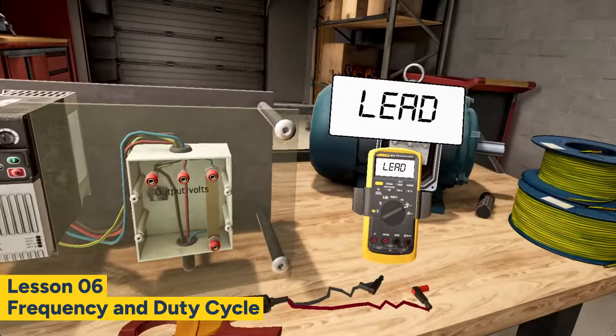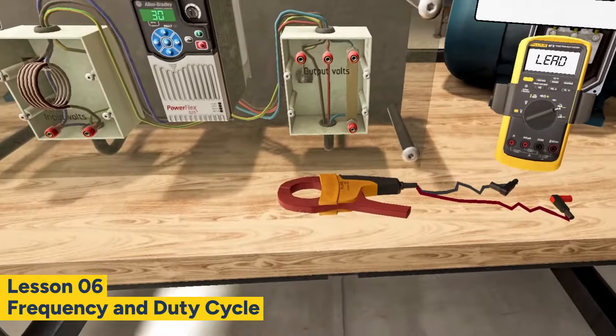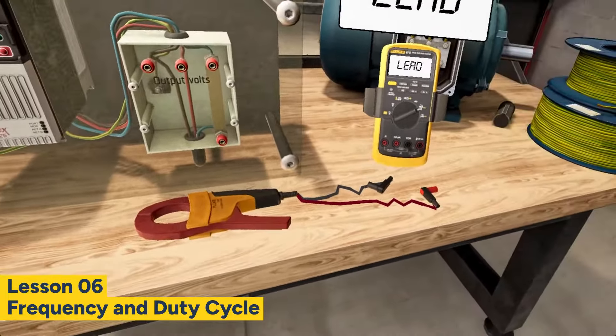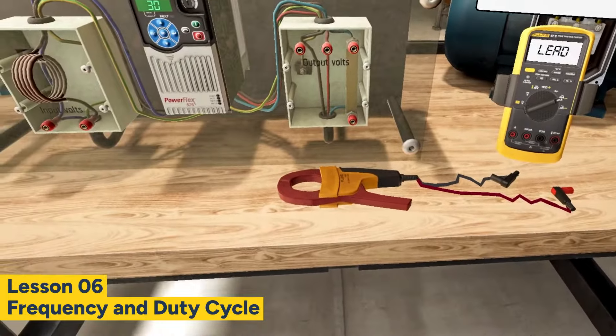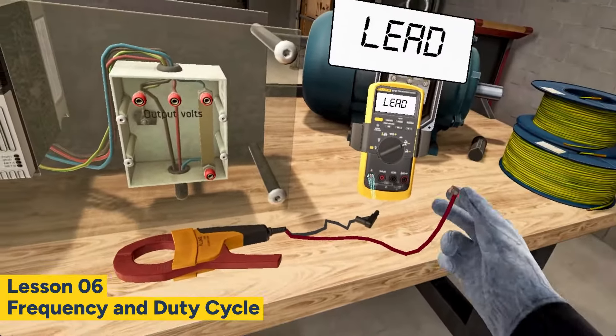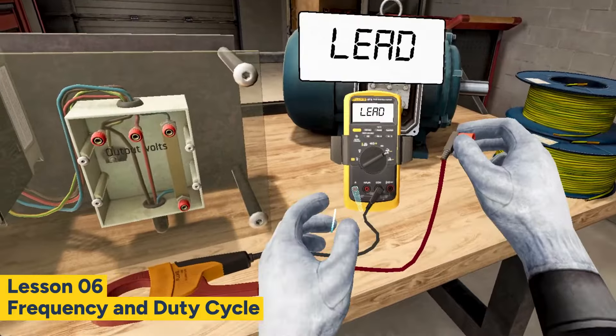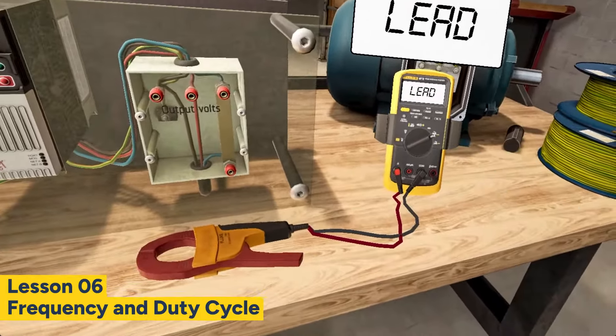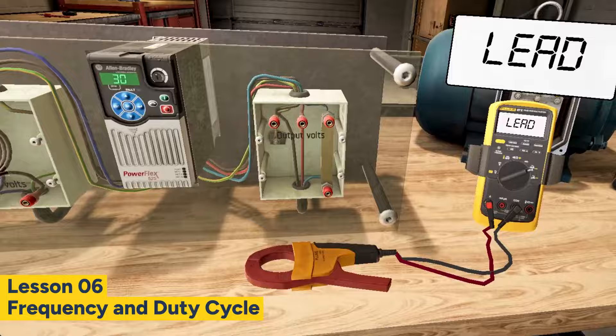This brings us to the clamp accessory, a safer and more convenient method for measuring current. Connect the clamp accessory to the input jacks. Now take the clamp and mount it around the improvised coil on the output box.